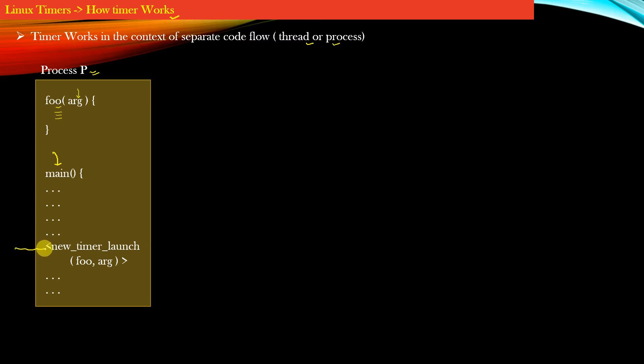Suppose at some point of time here your application launches a new timer. So let us suppose that new timer launch is some hypothetical API which your application uses in order to start a new timer.